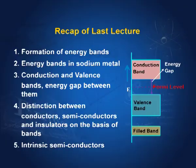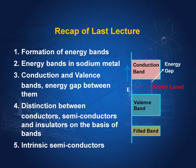In the last lecture, we learnt about the formation of energy bands in solids and as an example, we studied the energy bands in sodium. Then, we distinguished between conduction and valence bands, we found the gap between them called the energy gap or forbidden region and on the basis of these bands and the forbidden region, we distinguished between conductors, non-conductors and semi-conductors.